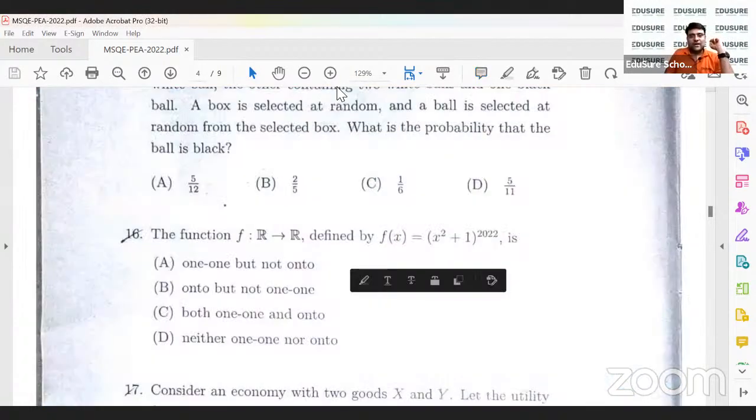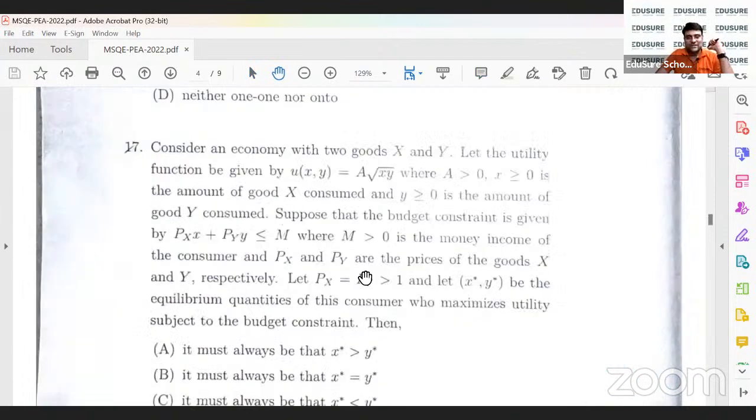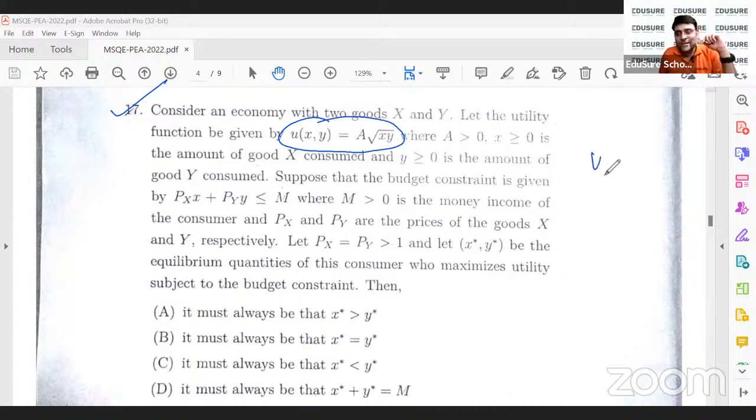Now, let's go on to the next problem that is question number 17. Aaj 17th of April hai and 17th question aaj hum log kareenge. As promised, every day we'll do the question equal to the date. So question number 17. Consider an economy with two goods, x and y. Let the utility function be a root over xy.